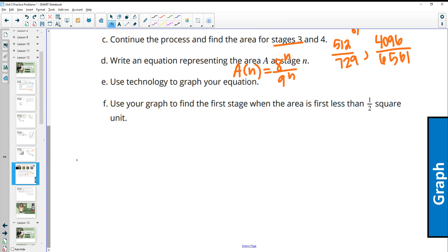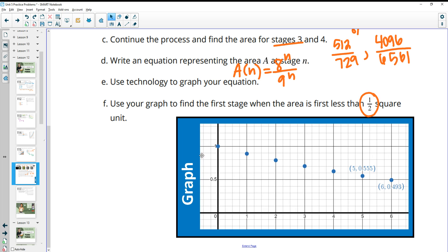Then it wants you to use technology to graph this equation and figure out when it's less than half a square. So I went ahead and just graphed those dots at each spot, and then I labeled down here stage 5 and stage 6 so that you can see what you actually get for an output. And that output is just by dividing those numbers. This is 8 to the fifth over 9 to the fifth, and this is 8 to the sixth over 9 to the sixth for this one. And you can see that in the sixth stage, it drops below 0.5, so when n equals 6.